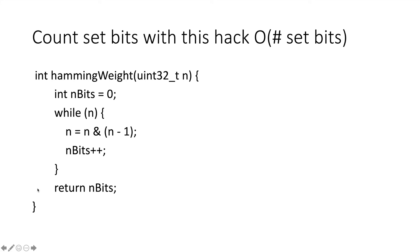With this hack, we can actually count the number of set bits in O of the number of set bits by replacing the for loop with while n, set n to be n equals n AND n minus 1, which is basically n with the lowest set bit set to 0, and then increment the number of bits that have been set and return the value.